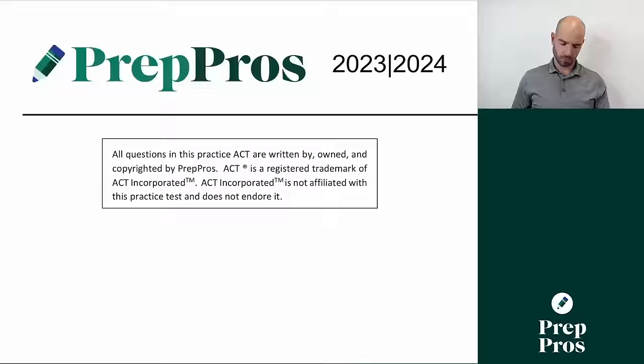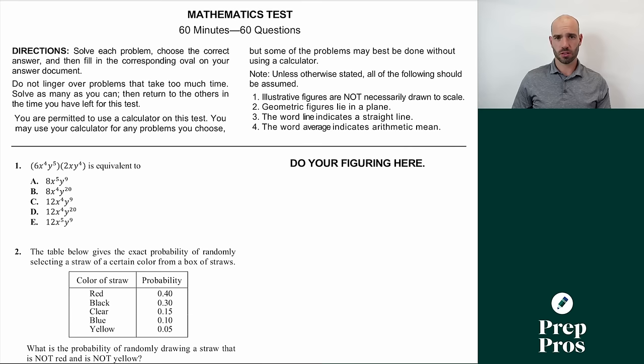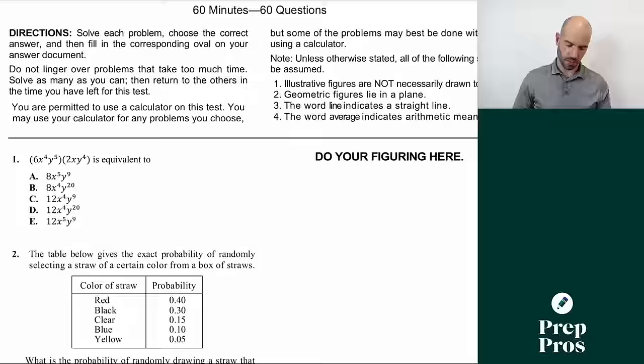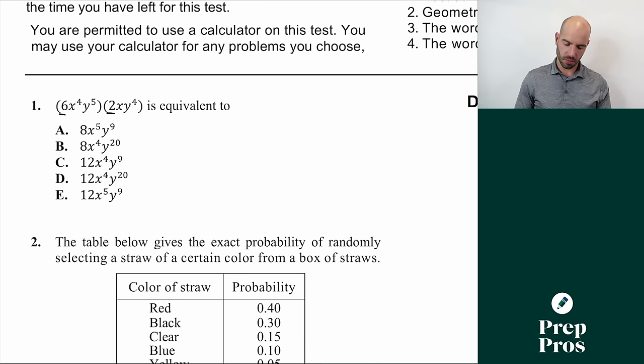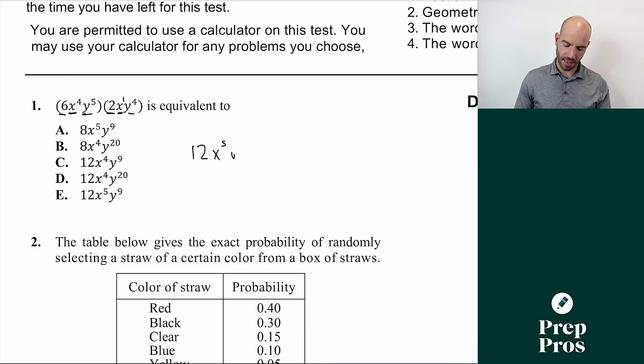Starting with number one. As you go through your math test, the difficulty increases — the first 15 to 20 questions will be easier, then medium, and the last 10 or 15 will feel a lot harder. Number one is a basic exponents question. When we multiply exponents, we multiply the numbers together to get 12. When we multiply variables with exponents, we add the exponents: x to the fourth plus x to the first gives x to the fifth, and y to the fifth plus y to the fourth gives y to the ninth. The correct answer is E.